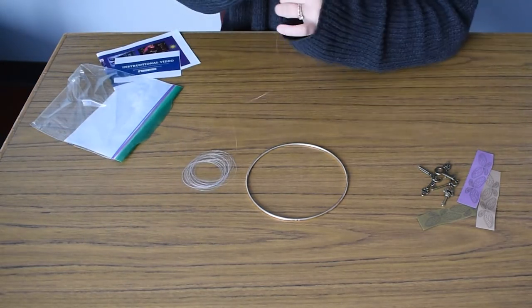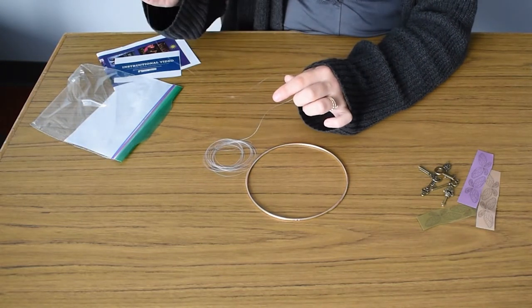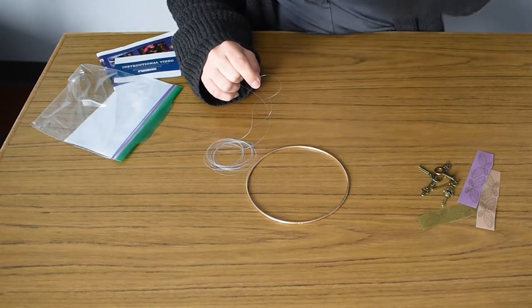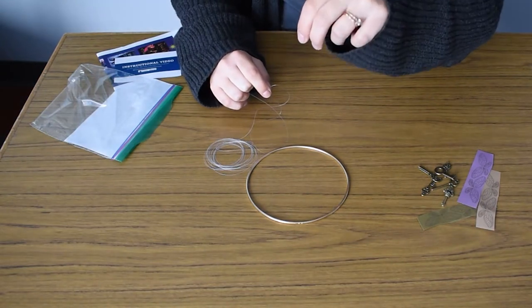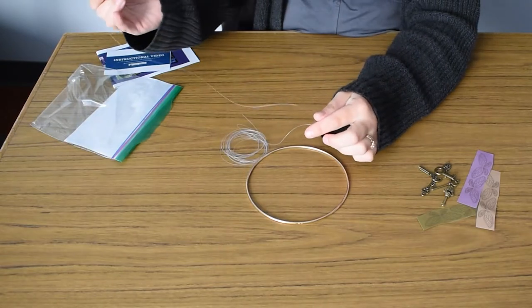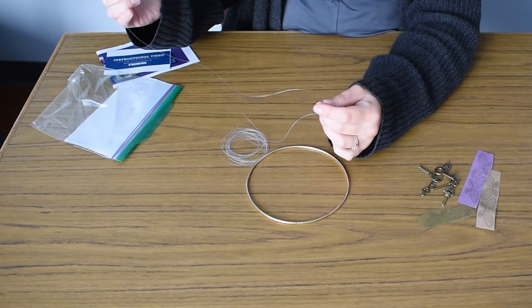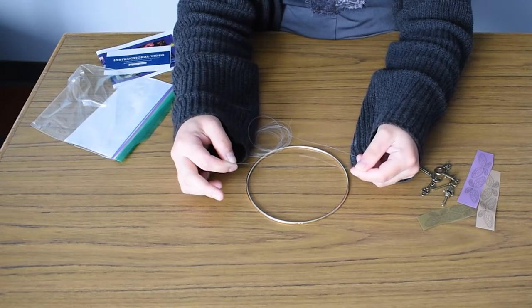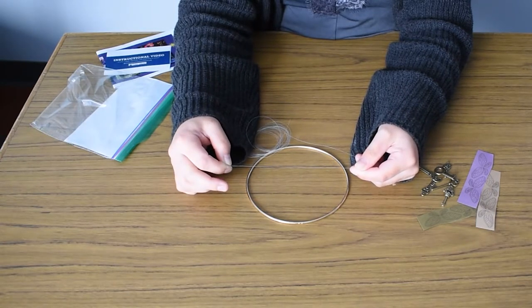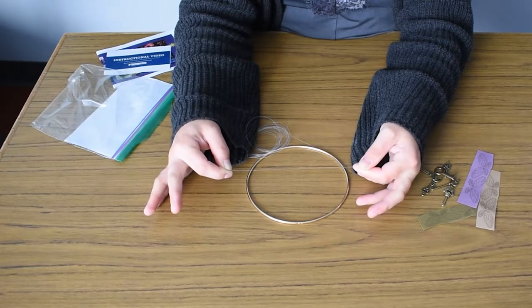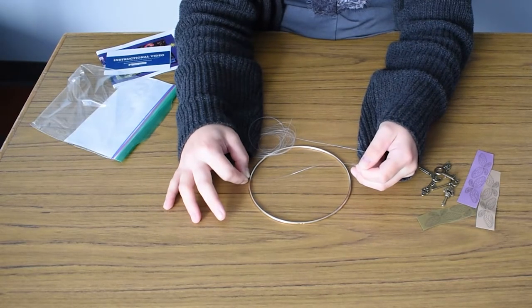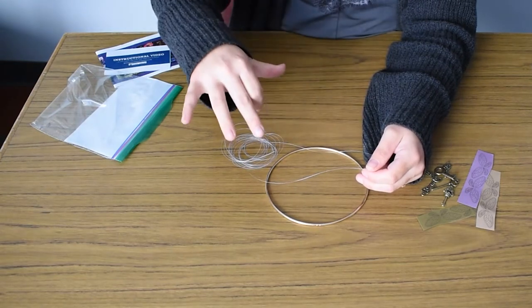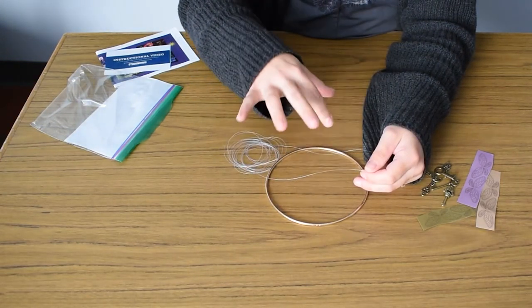And you are going to first focus on the hanging part of the mobile that's going to go on top and hang from your ceiling or wall, whatever. What I did was I just took about probably six or seven inches of string, and then I tied it on to the hoop right here. And then I did that four times around, so I had one on each part of my hoop.